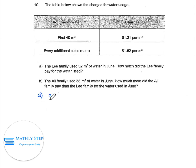Because 32 cubic meters is less than 40 cubic meters, so we use the first row for the calculation. We use 32 times 1.21 equals $38.72.